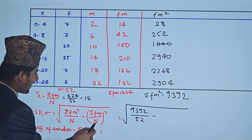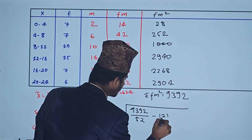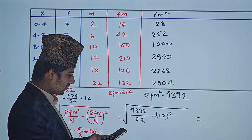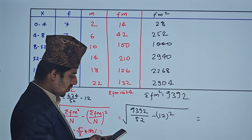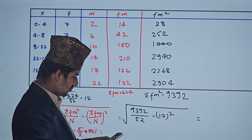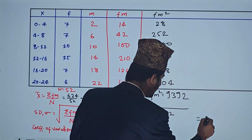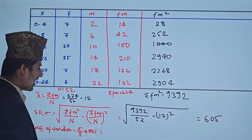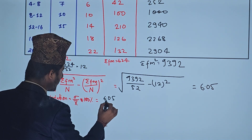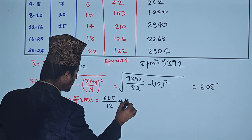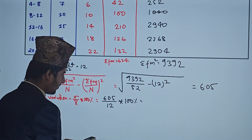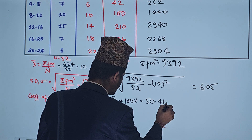Summation f×m divided by n = 624 ÷ 52 = 12. Applying the standard deviation formula gives sigma = 6.05. The coefficient of variation = 6.05 ÷ 12 × 100% = 50.416%.